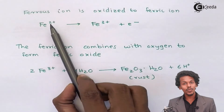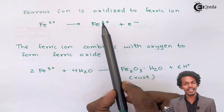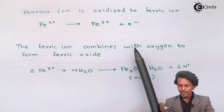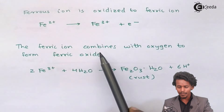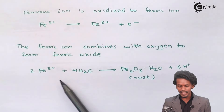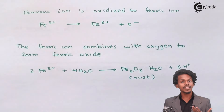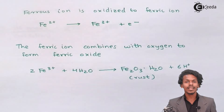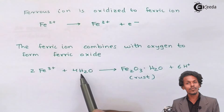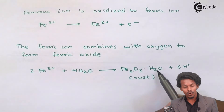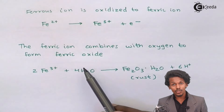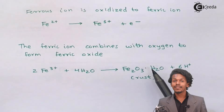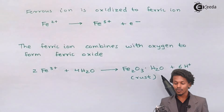Fe²⁺ is converted into Fe³⁺ — ferric iron — which combines with oxygen present in the air along with H₂O to form ferric oxide. This ferric oxide combines with oxygen dissolved in water to form a hydrated form of iron oxide. Specifically, 2Fe³⁺ combines with 4H₂O to form Fe₂O₃·H₂O plus 6H⁺. This hydrated ferric oxide is what we know as rust.